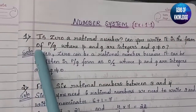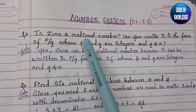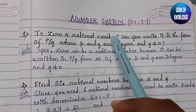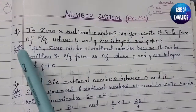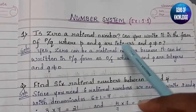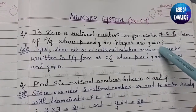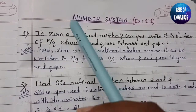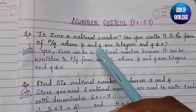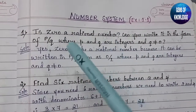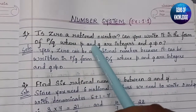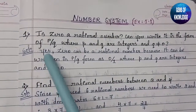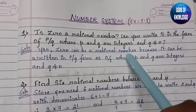The first question is: Is zero a rational number? Can you write it in the form of p/q, where p and q are integers and q is not equal to zero? They are asking whether zero is a rational number. For a number to be rational, it should be in the form of p/q. The answer is yes — zero can be a rational number.